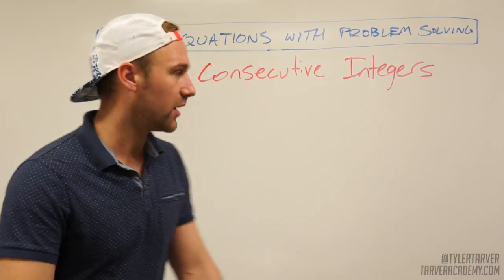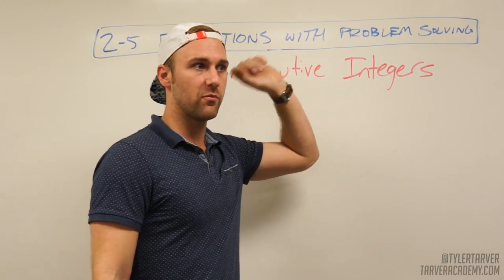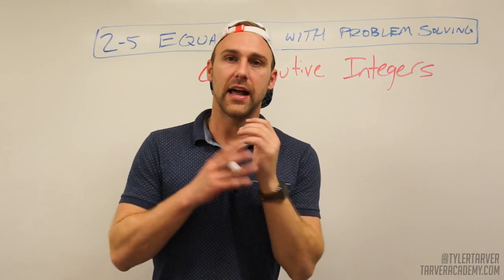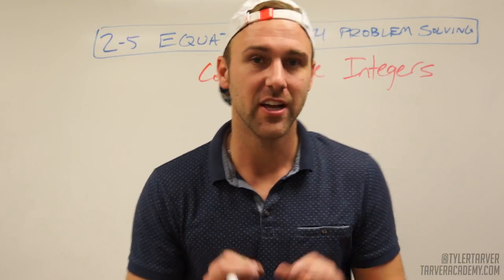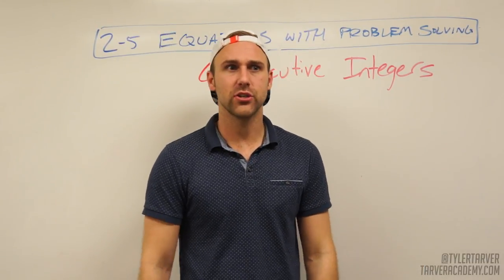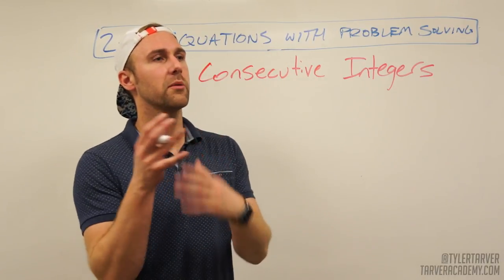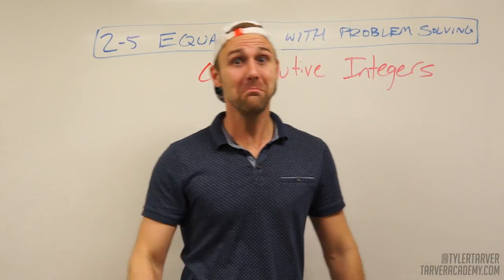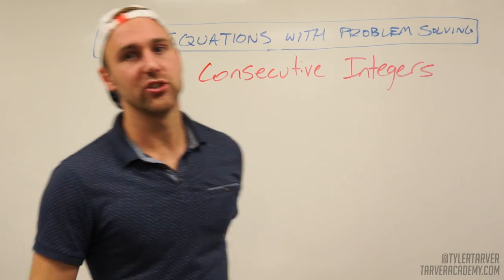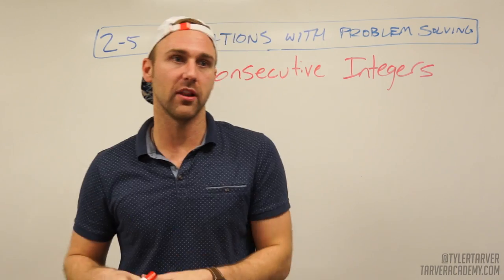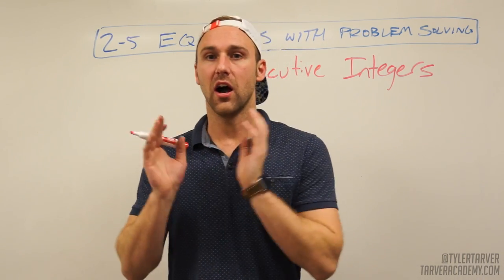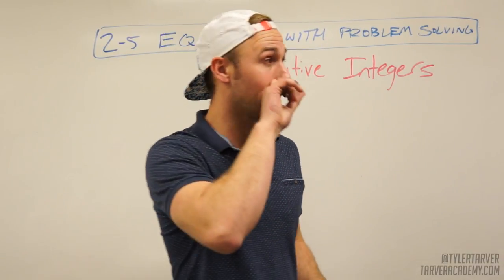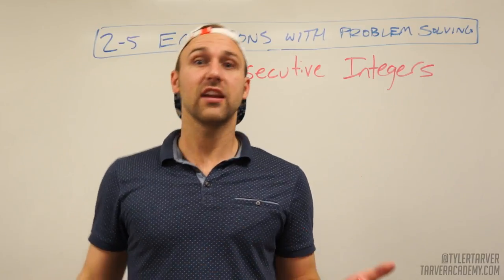Tyler here with tarveracademy.com. We're talking about solving equations using word problems — specifically consecutive integers. With math they're not very creative, so they stick to things like consecutive integers: numbers that are back to back, differing by one. Like 49 and 50, 71 and 72, 100 and 101, or 3, 4, 5. Consecutive means back to back, like consecutive home runs in baseball.